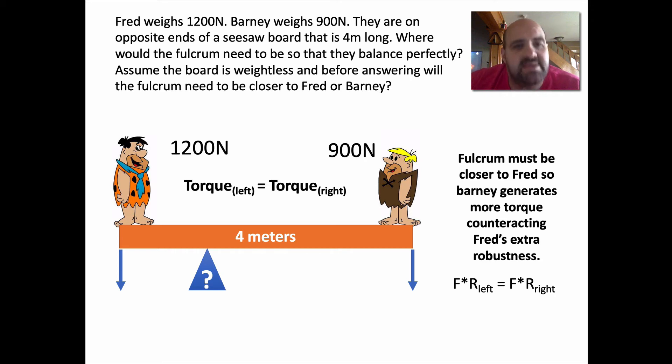But we don't know either distance. We have two unknowns right now. So we're going to call Fred's distance from the fulcrum X. We are going to call Barney's distance from the fulcrum Y. So right now we know 1200 times X, the torque on the left, must equal 900 times Y, the torque on the right. The problem is we have two unknowns and we can't possibly solve that.